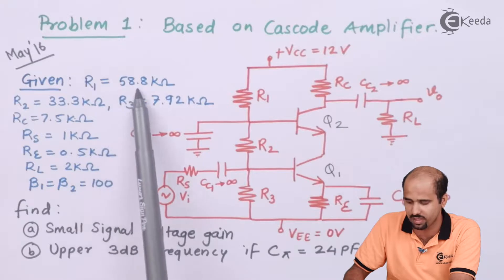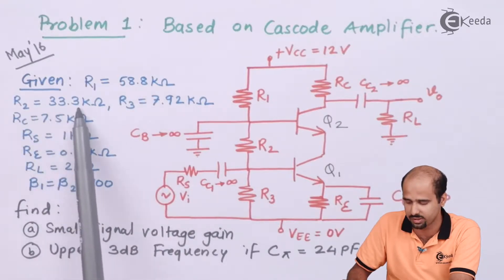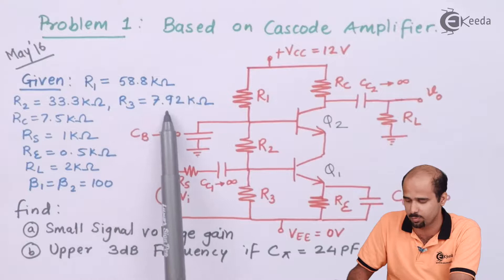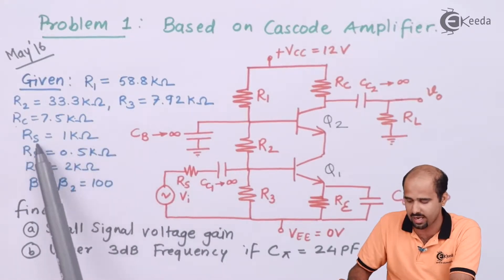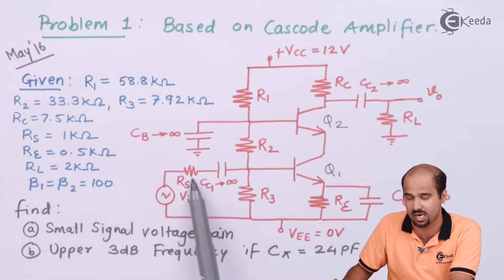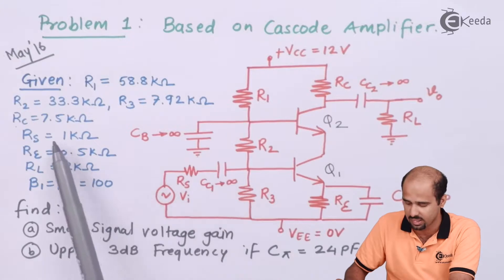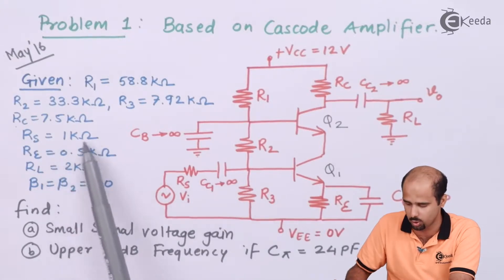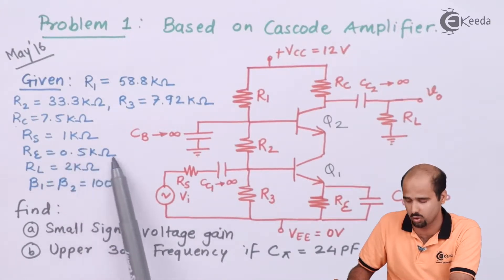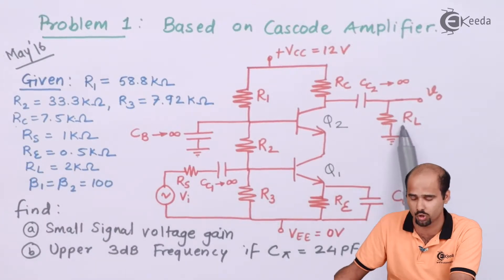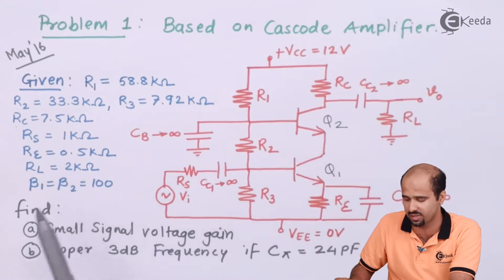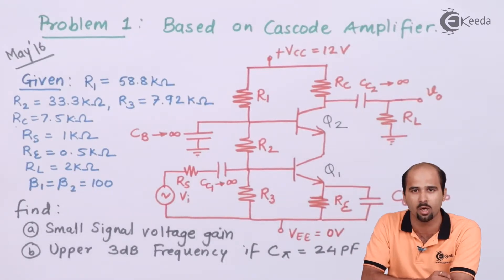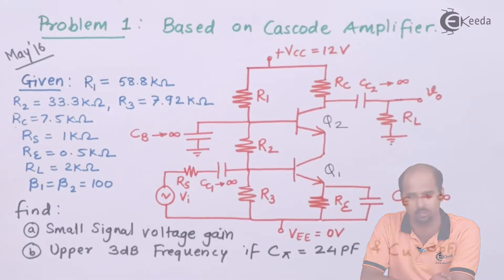R1 = 58.8 kΩ, R2 = 33.3 kΩ, R3 = 7.92 kΩ, RC = 7.5 kΩ. RS, the source resistance placed before coupling capacitor CC1, is 1 kΩ. RE = 0.5 kΩ. RL, the load resistance after coupling capacitor CC2, is 2 kΩ. β1 and β2 are the current gains for Q1 and Q2 respectively, both equal to 100.